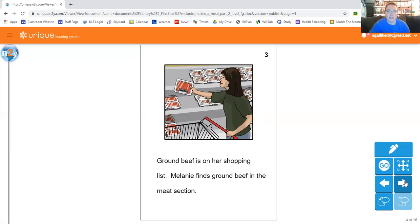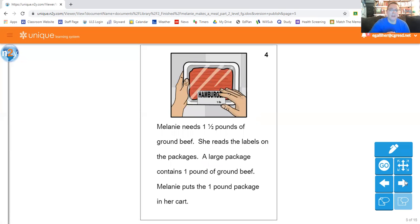Ground beef is on her shopping list. Melanie finds ground beef in the meat section. Melanie needs one and a half pounds of ground beef. She reads the labels on the packages. A large package contains one pound of ground beef. Melanie puts the one pound package in her cart. So for whatever reason, whatever recipe she's making, she needs one and a half pounds of ground beef. Is that enough?